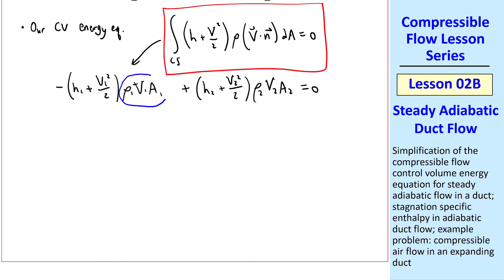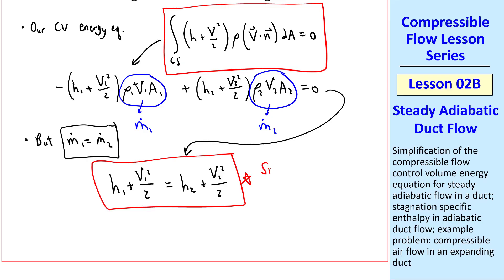But we recognize this grouping of terms as m dot 1, the mass flow rate at the inlet, and this grouping of terms as m dot 2. But we know that m dot 1 equal m dot 2 by conservation of mass. So this equation simplifies to h1 plus v1 squared over 2 equal h2 plus v2 squared over 2. This is our simplified energy equation for steady adiabatic 1D duct flow.